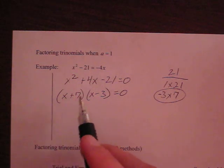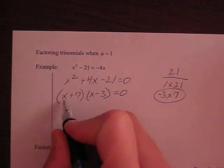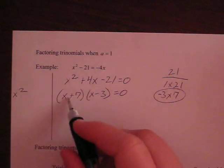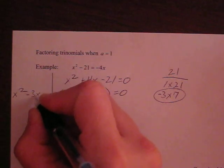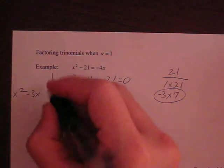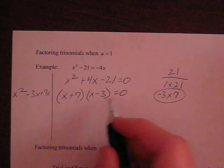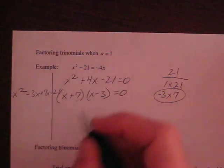And the way you check it is by multiplying the binomials together. So if I have x times x, that is x squared. x times negative 3 is minus 3x. 7 times x is plus 7x. And then positive 7 times negative 3 is negative 21.